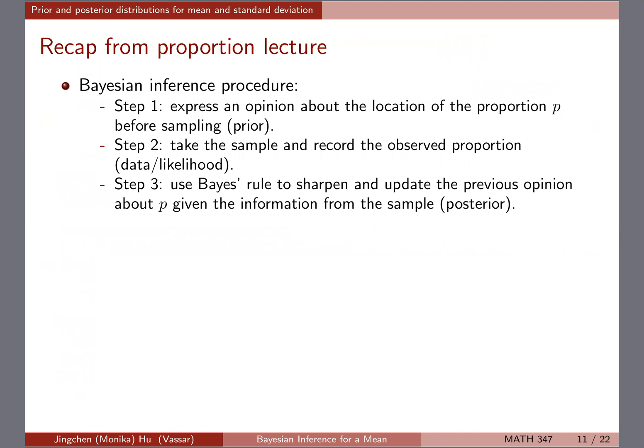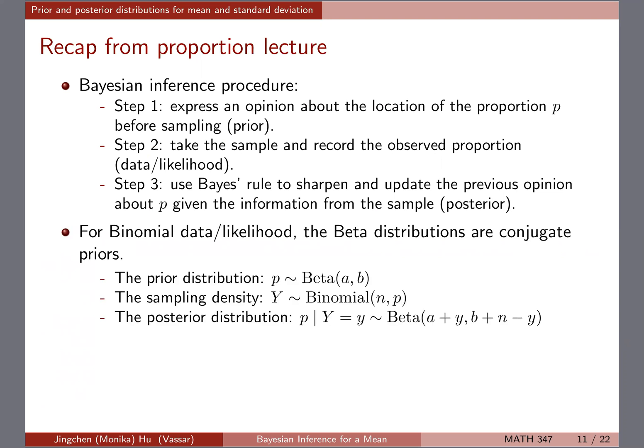From the proportion lecture we did previously, we know that Bayesian inference has three general steps. First, express prior thinking about the unknown proportion P before sampling — that's the prior. Step two is take the sample and record the observed proportion — that's the data and likelihood function, through a binomial model for the proportion case. Step three is use Bayes' rule to update the prior opinion, giving us the posterior.